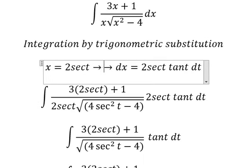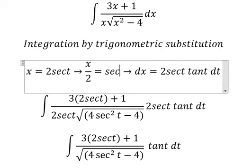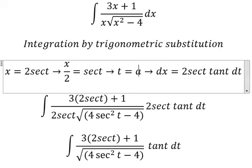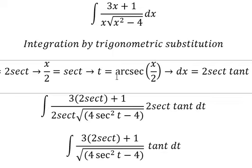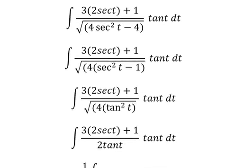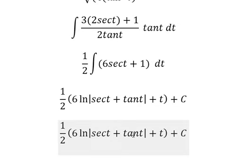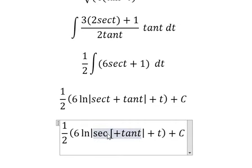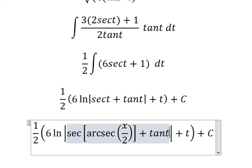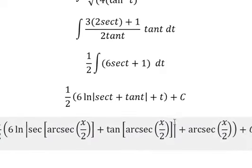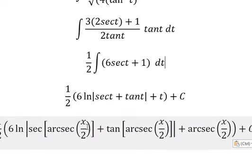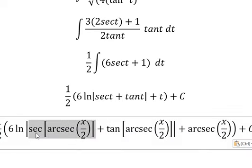So we divide both sides with number 2. We change it to t. So we put this one in here. Secant of arcsecant, you got about x over 2.